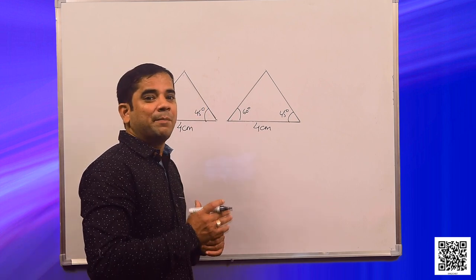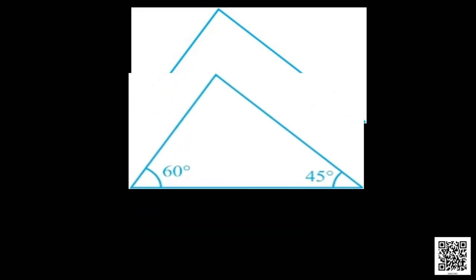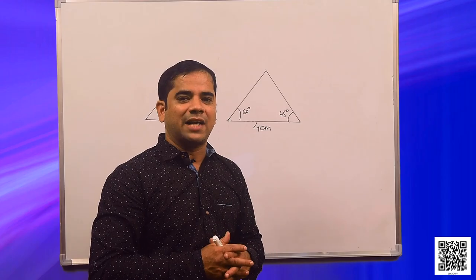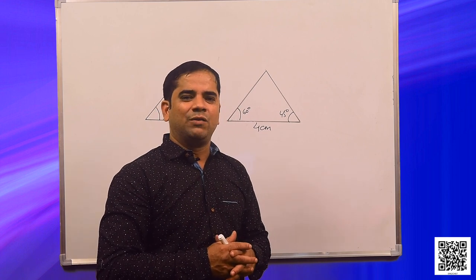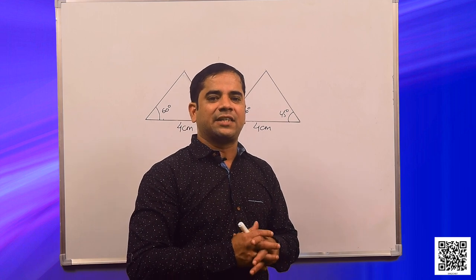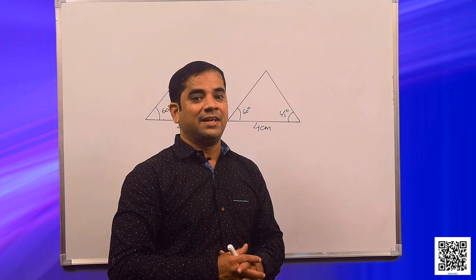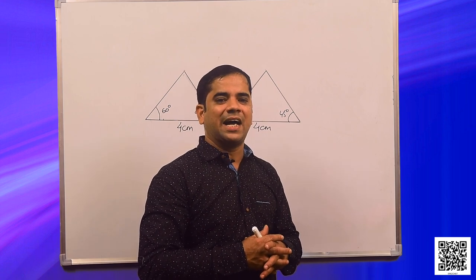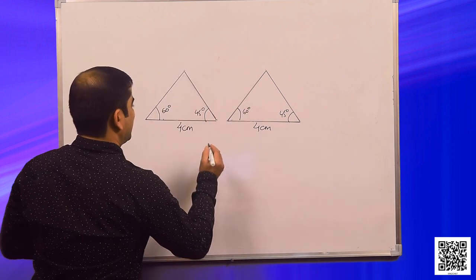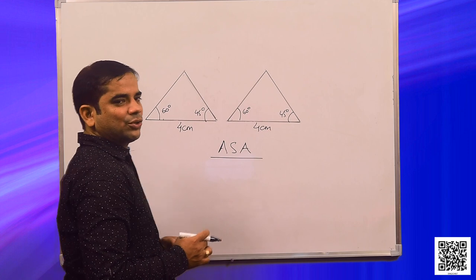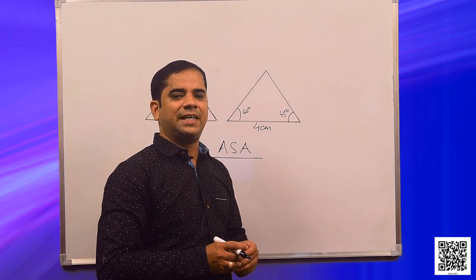This happens in both triangles — both have a base of 4 cm which is the included side of the 60-degree and 45-degree angles. If we cut out these triangles and place one on the other, one triangle covers the other completely, meaning the two triangles are congruent. This gives us the ASA criterion for congruency of triangles.